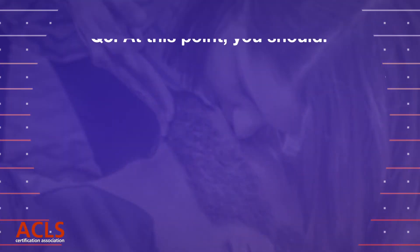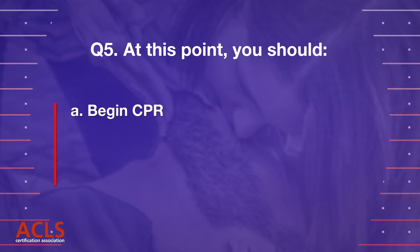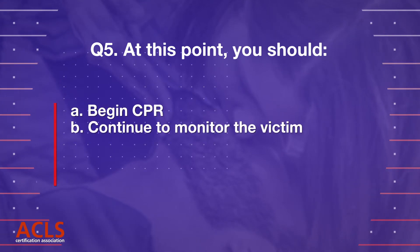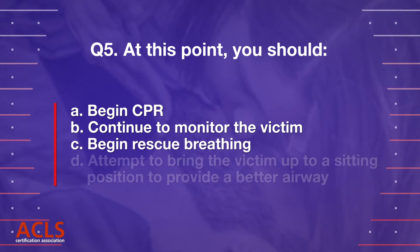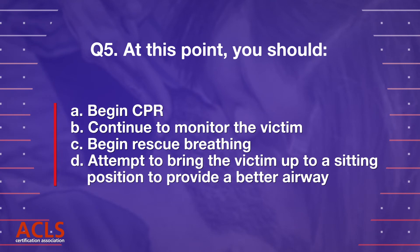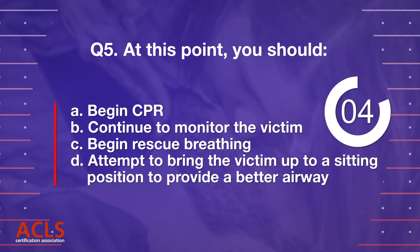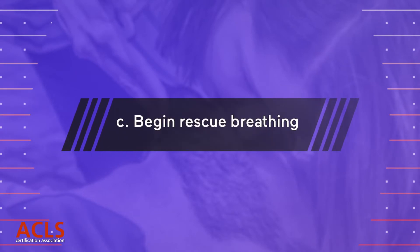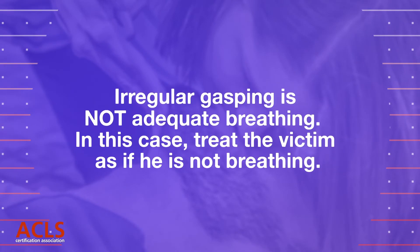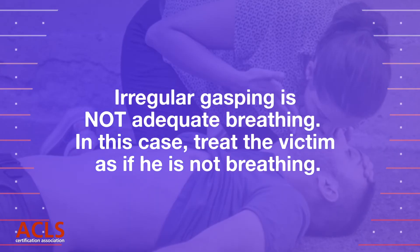Question 5: At this point you should: A) begin CPR, B) continue to monitor the victim, C) begin rescue breathing, or D) attempt to bring the victim up to a sitting position to provide a better airway. Correct answer: C, begin rescue breathing. Irregular gasping is not adequate breathing. In this case, treat the victim as if he is not breathing.